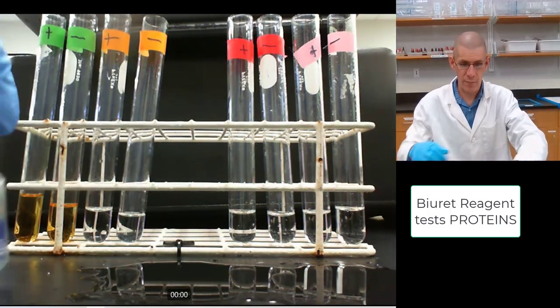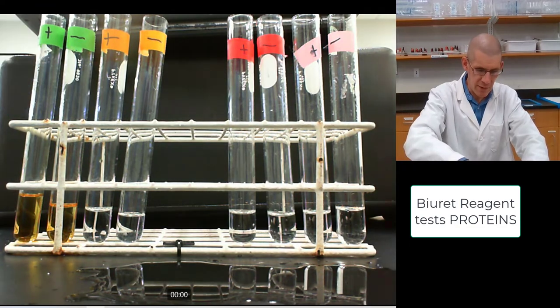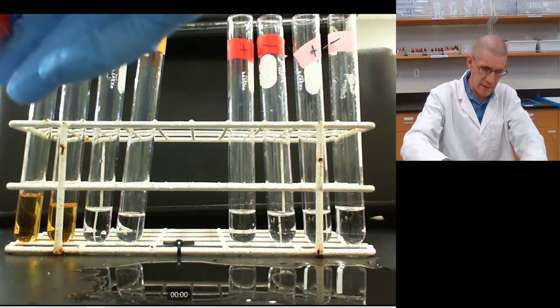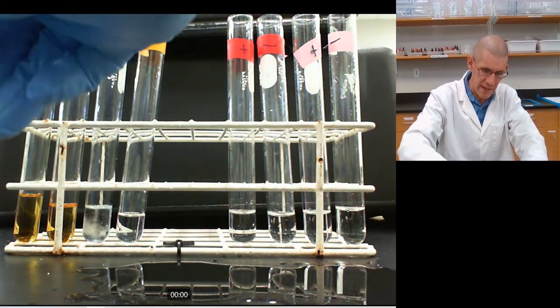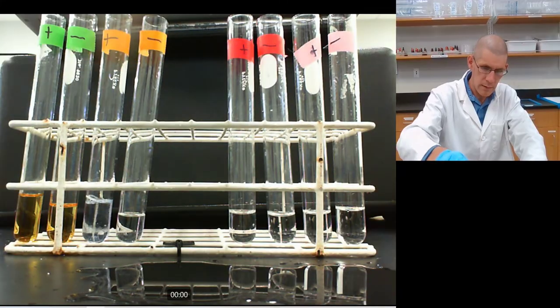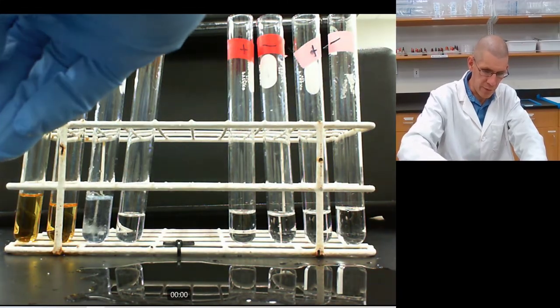Biuret is next. This will test for proteins. Biuret is a little bit tricky here. Biuret is a little bit less reactive, so it wouldn't hurt to add a little bit more. I might be going overboard here with these three squirts.